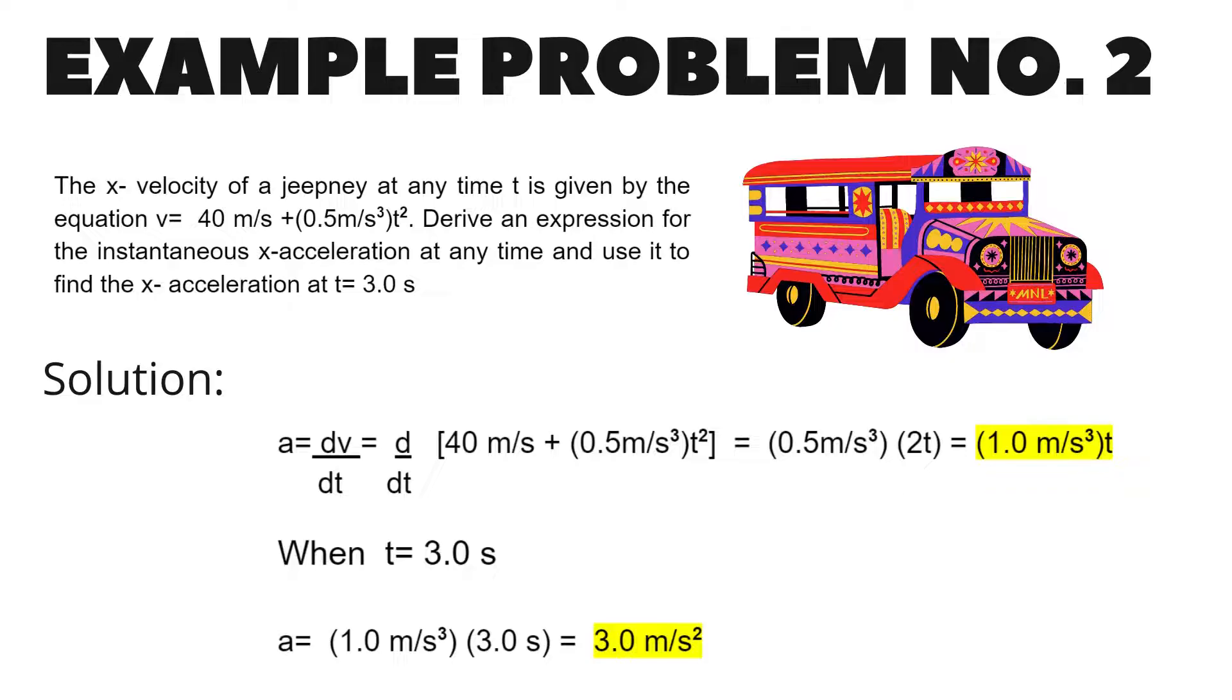To solve this problem, take the derivative of the expression for v with respect to t. The derivative of constant is 0 and the derivative of t squared is 2t. Therefore, the expression for a is equal to 1.0 meter per cubic second multiplied by t. When t is equal to 3 seconds, a is equal to 3.0 meter per second squared.